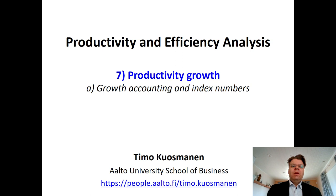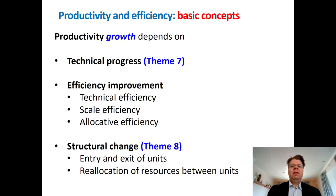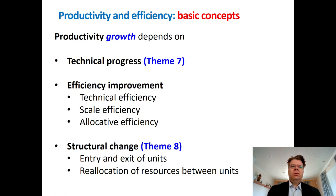In the seventh theme we look at the growth of productivity, starting with the classic growth accounting and index number approaches. Productivity growth depends on three sources: technical progress, as we have better technologies over time, and efficiency improvement, which we have thoroughly discussed so far in the static setting.